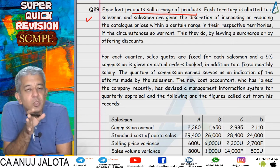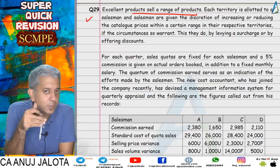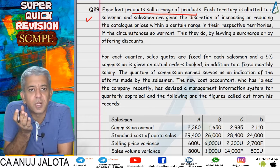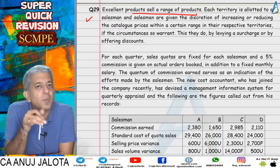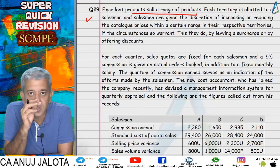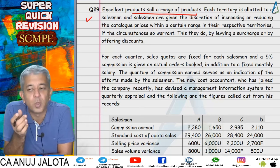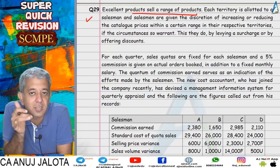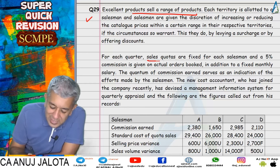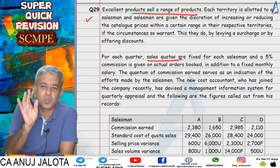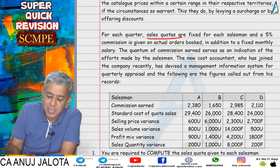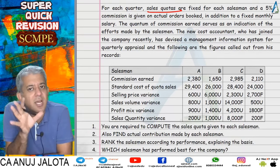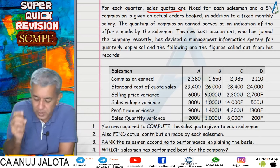There are four salesmen — A, B, C, and D — not four products. Each salesman sells various products. Each salesman has the option to increase prices by adding a surcharge or reduce prices by giving discounts. Each salesman was given sales targets, called sales quotas in this problem, for the particular period.